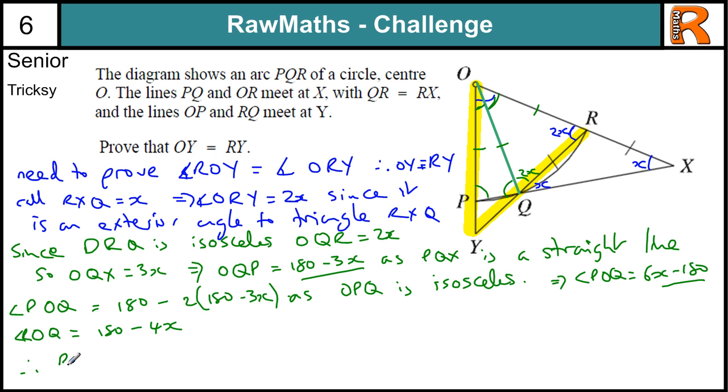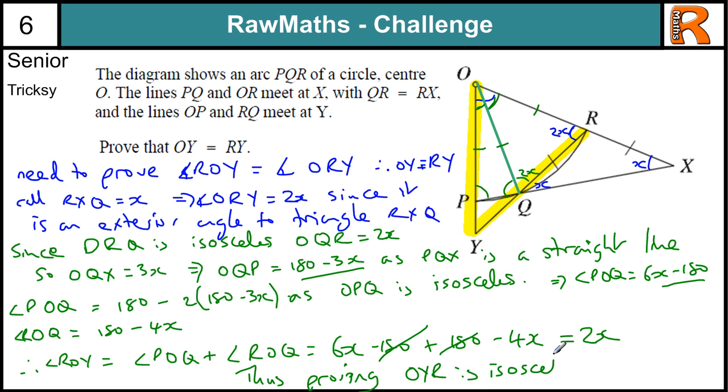Therefore, angle ROY is equal to angle POQ plus angle ROQ, which is 6X minus 180 plus 180 minus 4X. So the 180s go, 6X minus 4X is 2X. Thus proving OYR is isosceles, and therefore OY equals RY.